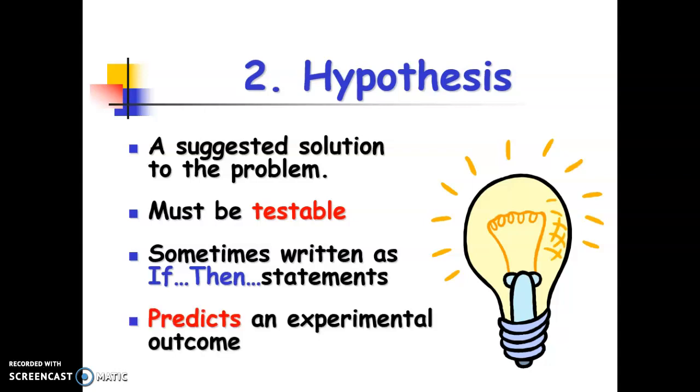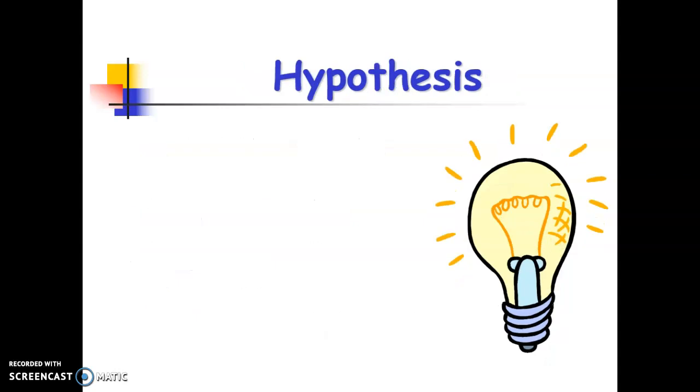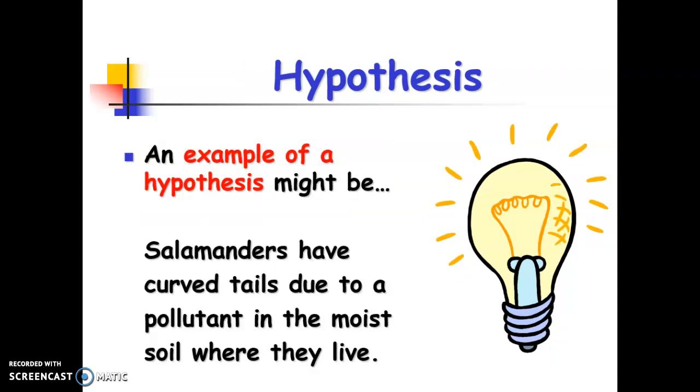Bottom line, a hypothesis will predict the experimental outcome. It does not have to be correct. It doesn't matter if the hypothesis is right or wrong, but it does predict the outcome of this particular experiment. So maybe our hypothesis for our salamanders is that those salamanders have curved tails due to the pollutant in the soil where they live. So we're predicting why they would have that curved tail versus the straight tail.